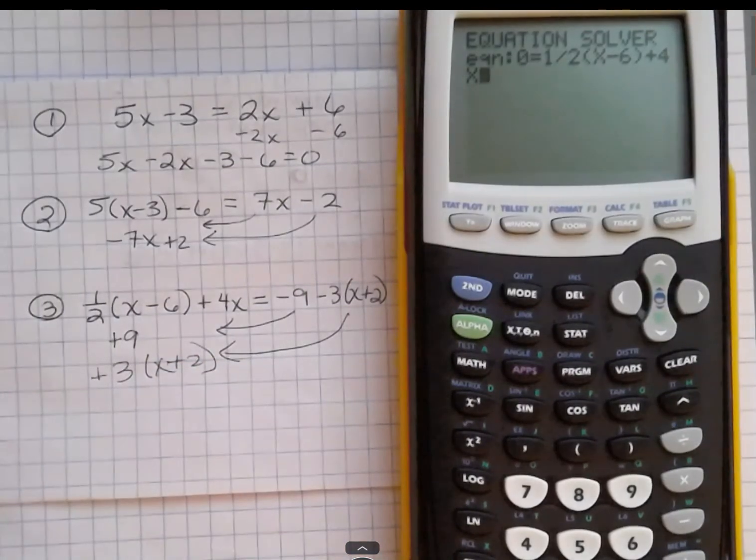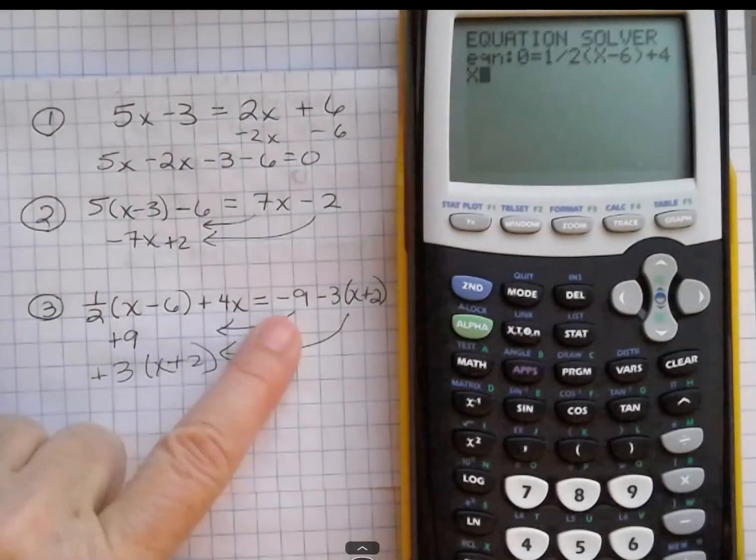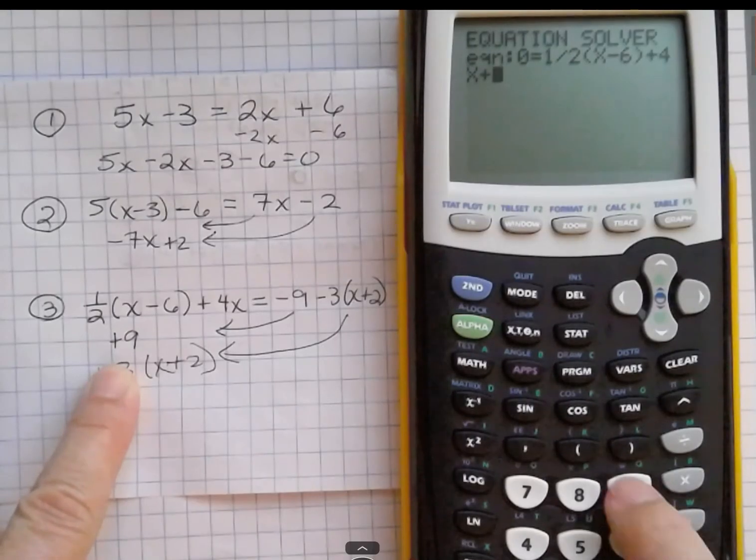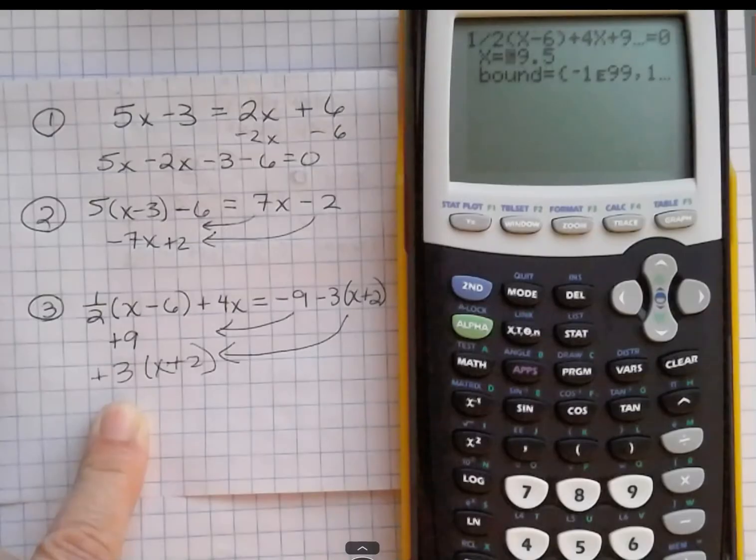So I'm just bringing that whole thing over as one term. And so I have the 4x, and then I have plus 9, and then plus 3, parentheses, x plus 2. So maybe this would save you some time. Maybe it won't. You have to decide whether you think it's worth it.